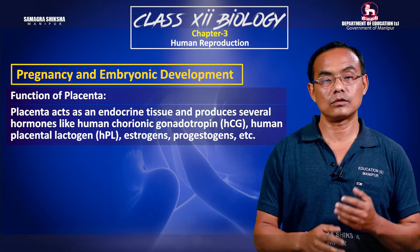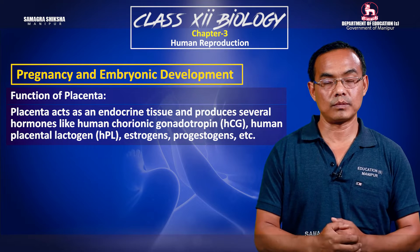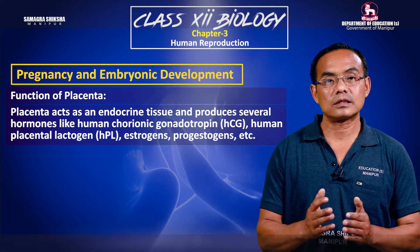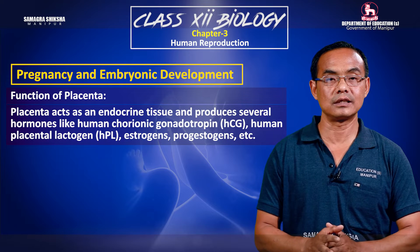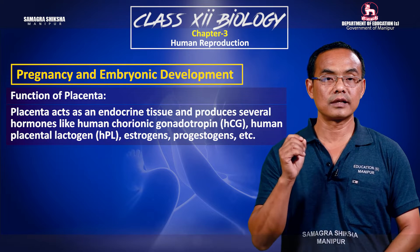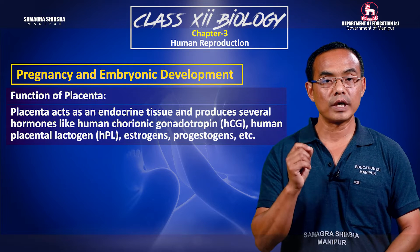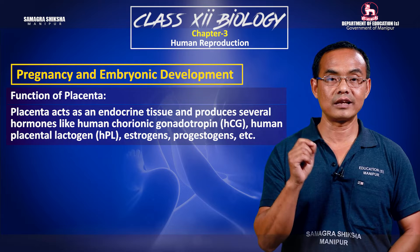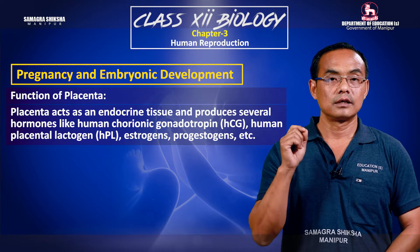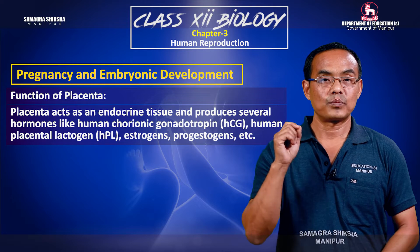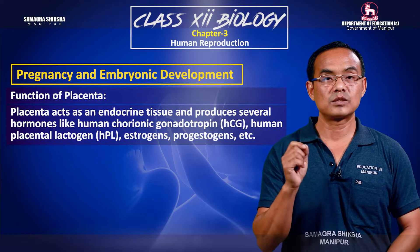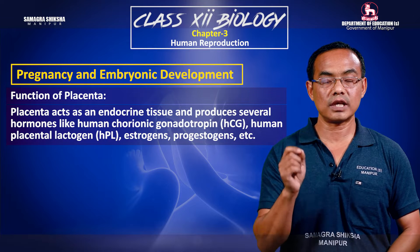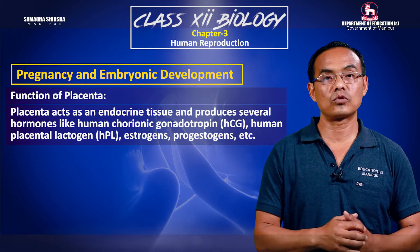The placenta secretes hormones including human chorionic gonadotropin (hCG), human placental lactogen (HPL), estrogen, progesterone, and other related hormones.